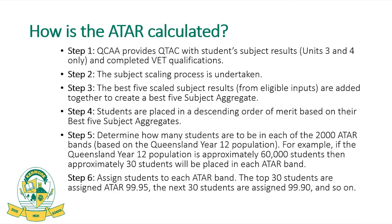The ATAR is calculated with QTAC receiving the student's final subject results of Units 3 and 4 only. Unit 3 begins in Term 4 of a student's Year 11. The results are then scaled — held up against all results across Queensland — and students' five best subject results will be used to generate an ATAR score and a tertiary rank. Students are then placed in descending order from 99.95 based on merit, across the thousands of students that receive an ATAR in Queensland.